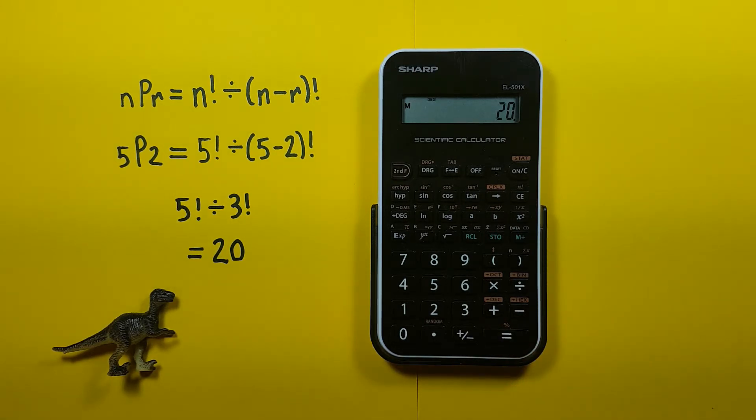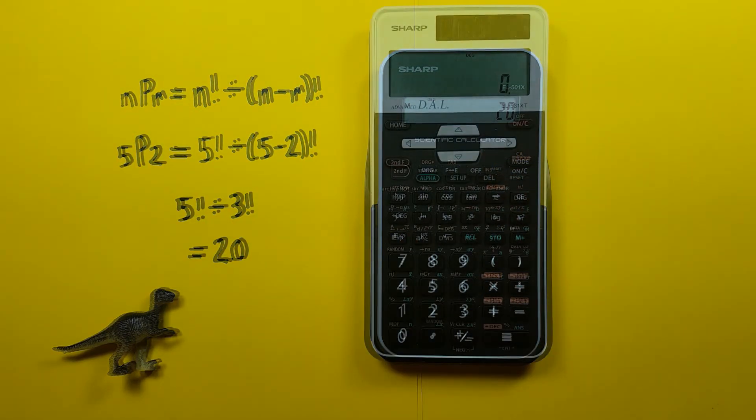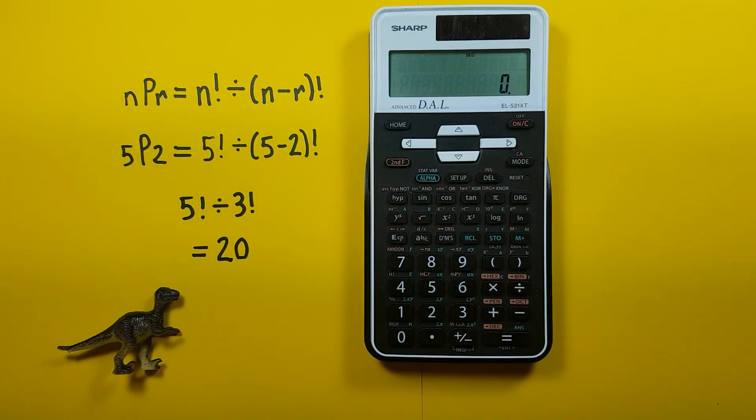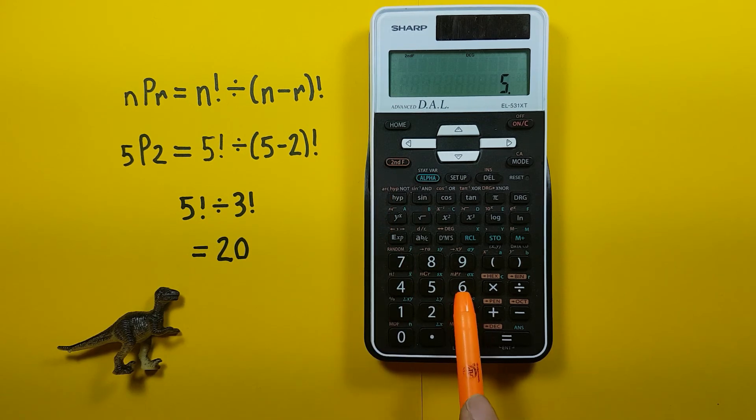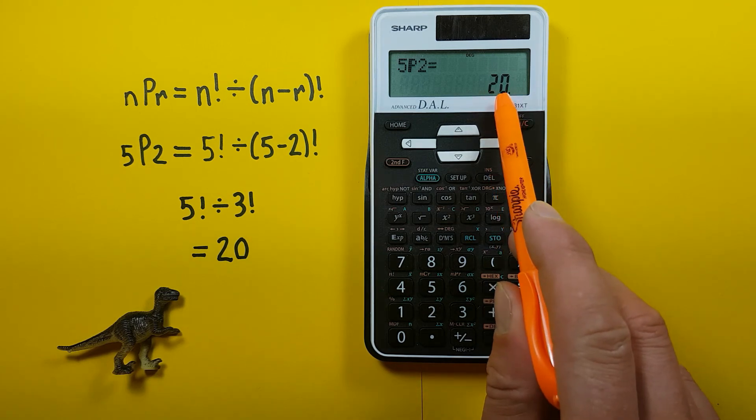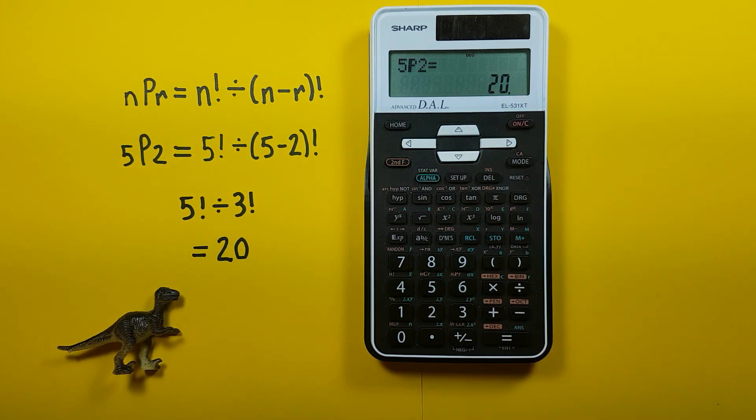Again we can confirm this by checking our calculator with a dedicated permutation key right here. So if we go 5 second 6 which is our permutation function there, 5P or 5 permutations and then 2 press equals and we see this gives us 20 total possible permutations.